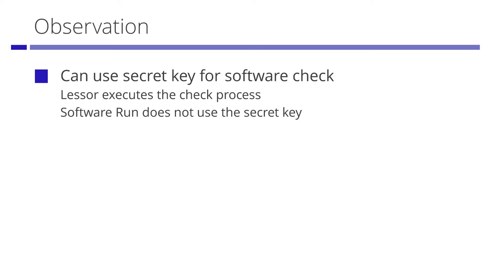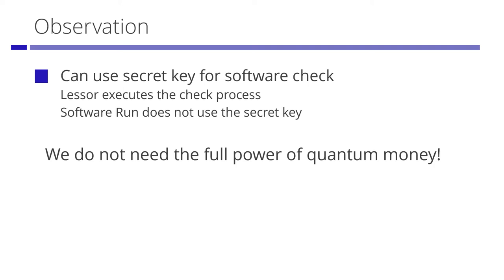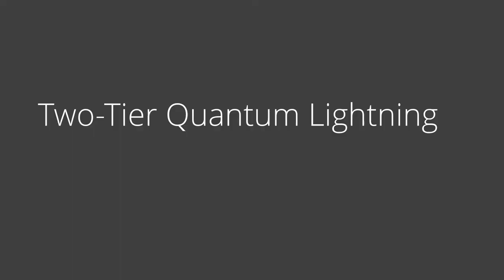The crucial observation here is that the lessor can use their secret key for checking the returned software, while we need a public key to run the leased software on the legitimate platform. We found that we do not need the full power of public key quantum money for finite-term security. A crucial tool for our construction is two-tier quantum lightning, which we introduce in this work.